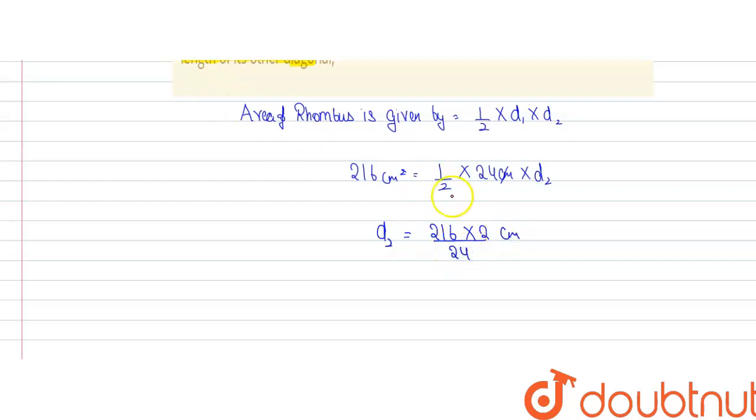So now we cancel. 2 1s are 2, 2 12s are 24, and 12 18s are 216.